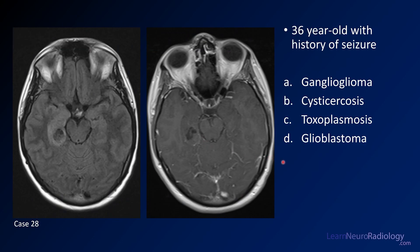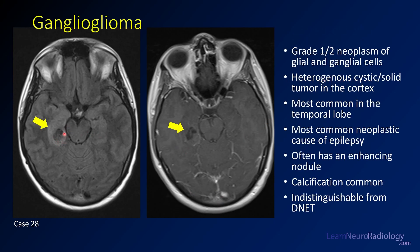Case number 28: a 36-year-old with a history of seizure. FLAIR and post-contrast images. Choices are ganglioglioma, cysticercosis, toxoplasmosis, or GBM. The answer is ganglioglioma. There's a predominantly cystic lesion in the medial temporal lobe with a little surrounding FLAIR signal and minimal enhancement. Gangliogliomas are low-grade tumors, usually grade 1 or 2 — cystic, sometimes with a nodular enhancing component. They tend to be indistinguishable from DNETs. In a testing setting, if you see a nodule of enhancement, call it ganglioglioma; if not, call it DNET. These are the most common neoplastic causes of epilepsy — think ganglioglioma or DNET in a young patient with seizure and a tumor.